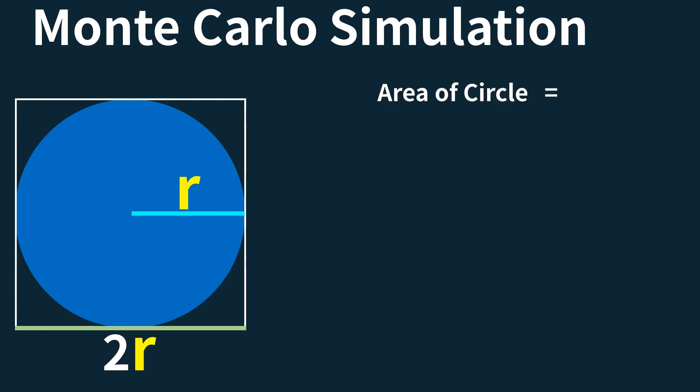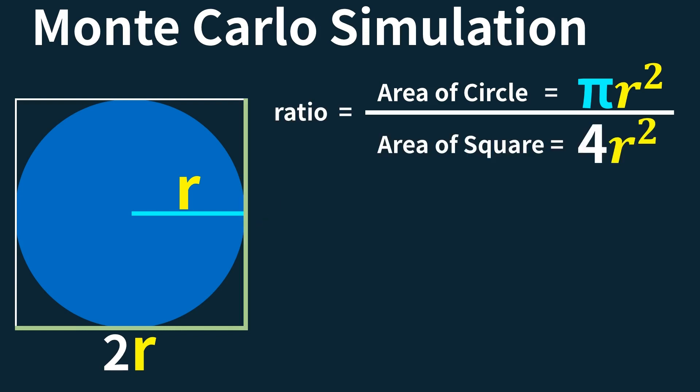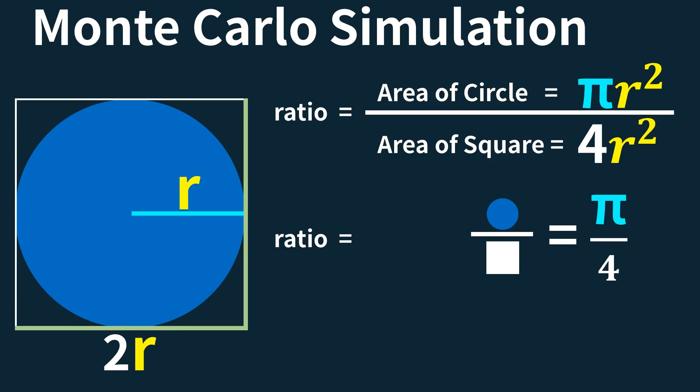We can calculate the area of the circle, which is pi times r squared, and the area of the square, which is 4 times r squared. We define a ratio as the area of the circle divided by the area of the square, which equals pi divided by 4, after cancelling out r squared from both the numerator and denominator. Therefore, pi is equal to 4 times the ratio of the two areas.